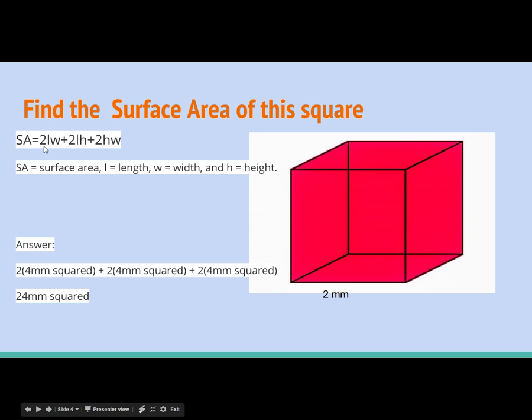Let's focus on the first part: two times the length and the width. Our length is two and our width is two, which gives us four millimeters squared. So that four millimeters squared goes right in here.